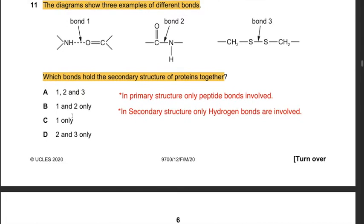Question 11: The diagram shows three different bonds. Which bonds hold the secondary structure of proteins together? Secondary structure involves only hydrogen bonds. Bond 1 shows hydrogen bonding. Bond 2 represents peptide bonds, involved only in primary structure. Bond 3 represents disulfide bonds, present only in tertiary structure. Therefore bond 2 and bond 3 are incorrect, leaving the answer as C: 1 only.